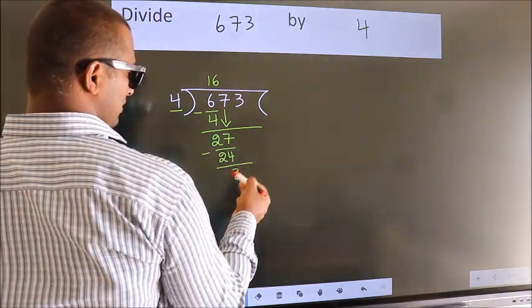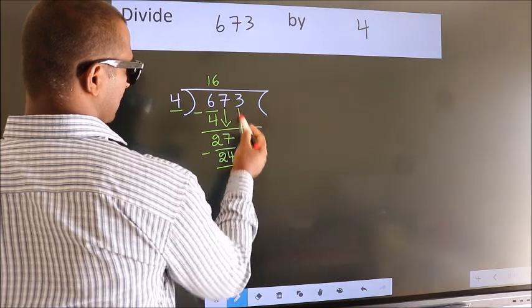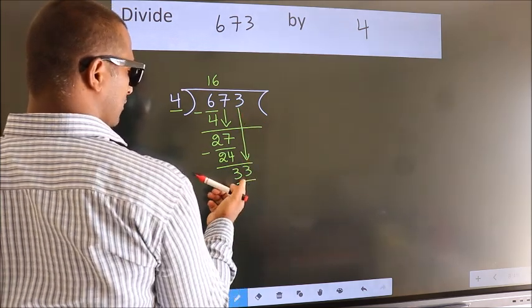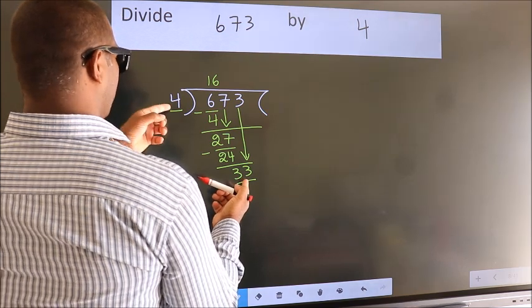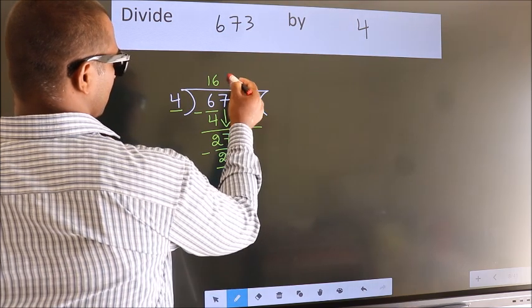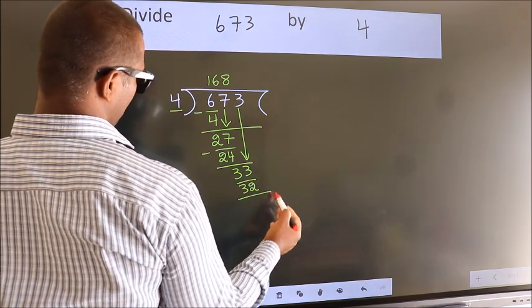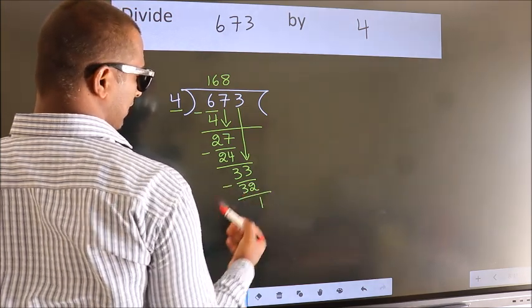After this, bring down the next number. So, 3 down. So, 33. A number close to 33 in the 4 table is 4 times 8, which is 32. Now we subtract. We get 1.